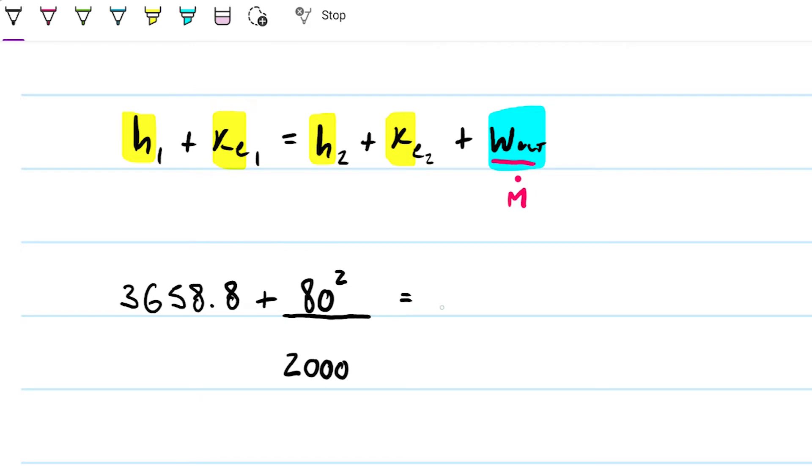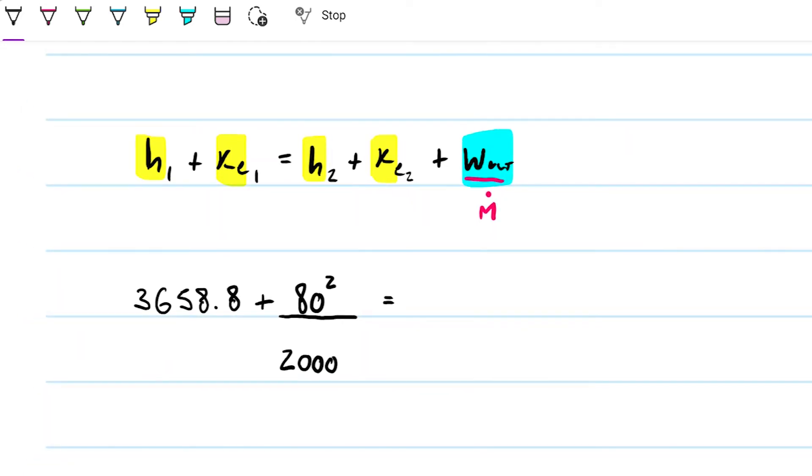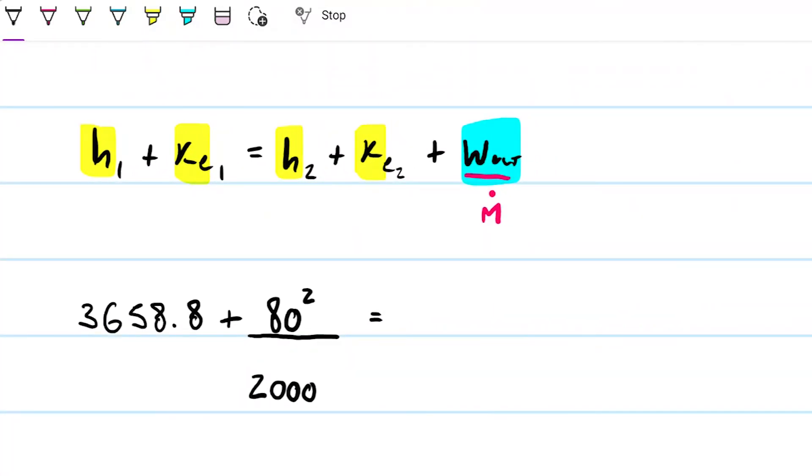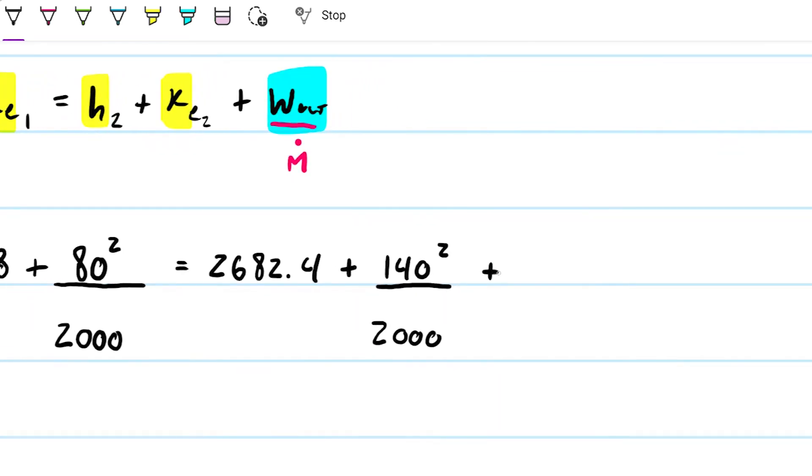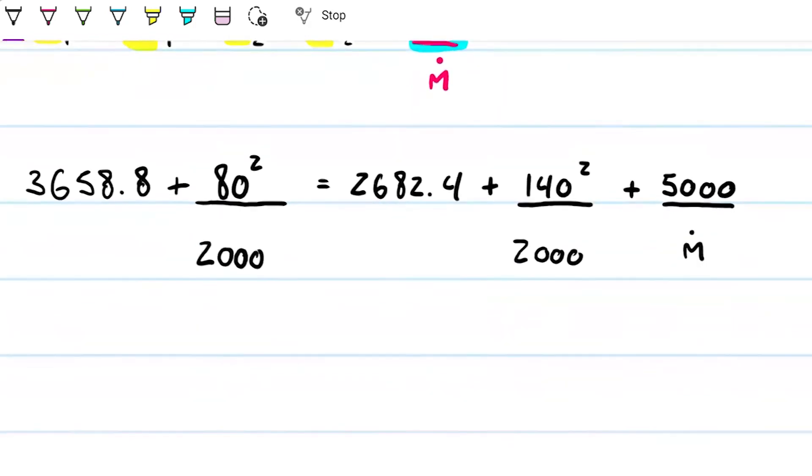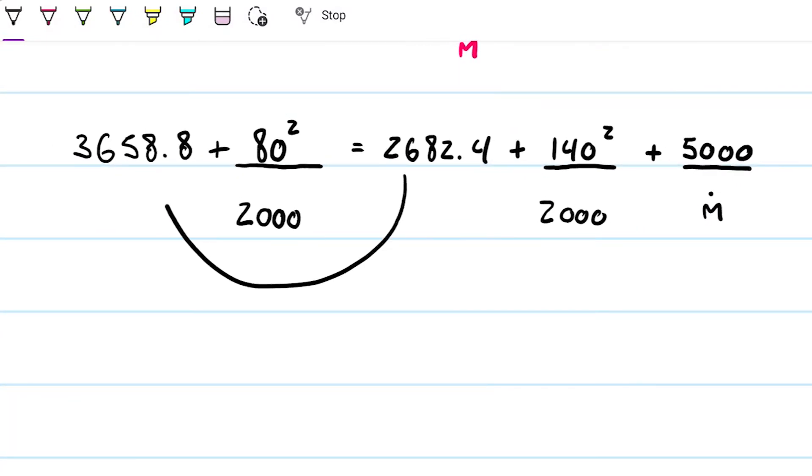So 80 velocity squared divided by 2000, so that we have kilojoules per kilograms as well. And we've done this in the past, so this shouldn't be a big surprise for anyone. Next we have, this is equal to the enthalpy state two, which is, we just found to be 2682.4. Again, kilojoules per kilograms. And the velocity on state two was 140. So it got faster. So some of the energy coming from the enthalpy actually went into the kinetic energy of state two.